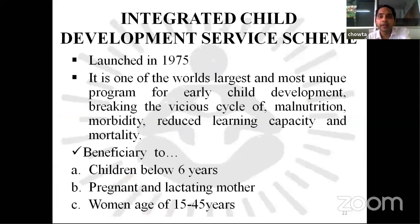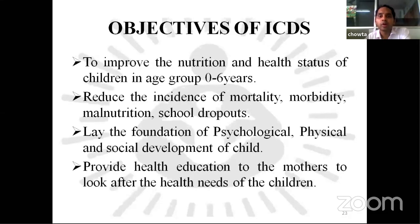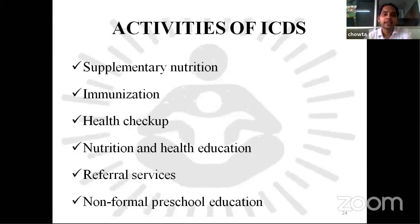Next is the Integrated Child Development Service Scheme, launched in 1975. It is one of the world's largest and most unique programs for early child development, breaking the vicious cycle of malnutrition, morbidity, reduced learning capacity and mortality. Beneficiaries are children below 6 years of age and pregnant and lactating women aged 15 to 45 years. Objectives include reducing the incidence of mortality, morbidity, malnutrition and school dropouts; laying the foundation for psychological, physical and social development of the child; and providing health education to mothers. Activities of ICDS are supplementary nutrition, immunization, health checkups, nutrition and health education, referral services, and non-formal preschool education.